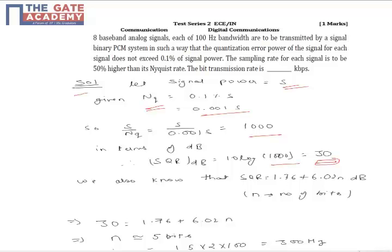We also know that for a PCM system, its SQR or SNR (signal to quantization error ratio) is given as 1.76 plus 6.02 times N dB, where N is equal to the number of bits.